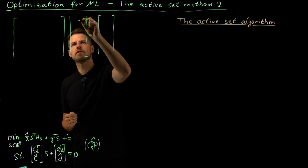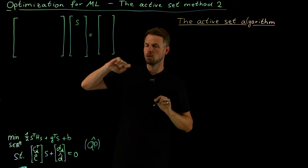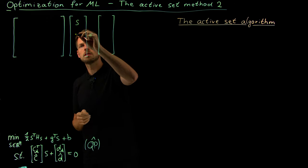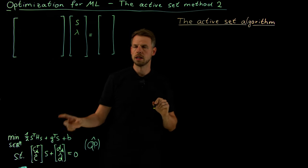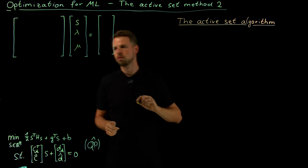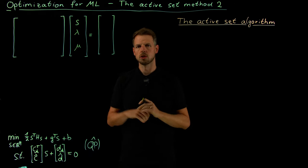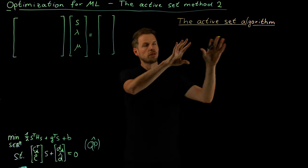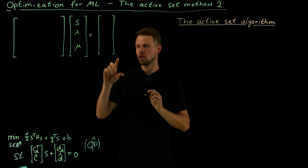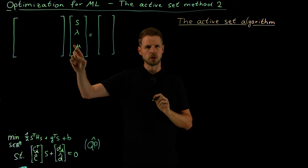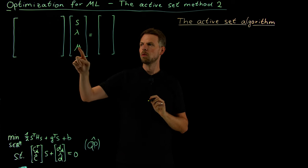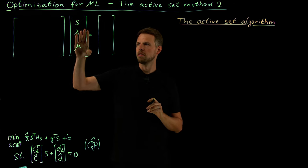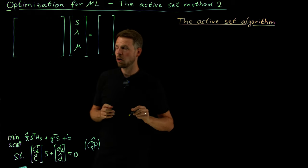I'm going to write this as a matrix-vector product. We have our update for the weights, WK+1 minus WK, then lambda — the multiplier for the active inequality constraints — and mu for the true equality constraints. I could combine these into one variable, but the distinction is important: in the KKT conditions, there are no further conditions on multipliers for equality constraints, but there is a non-negativity constraint on lambda for inequality constraints.